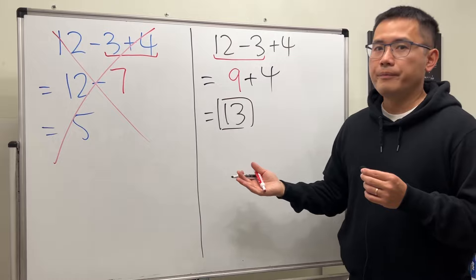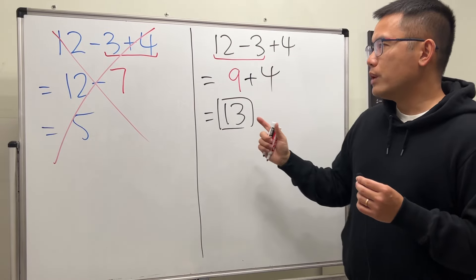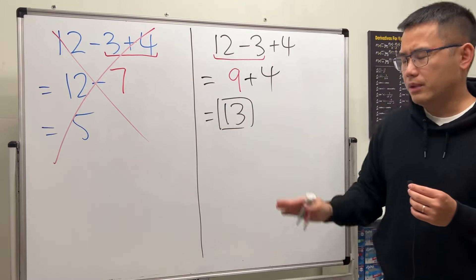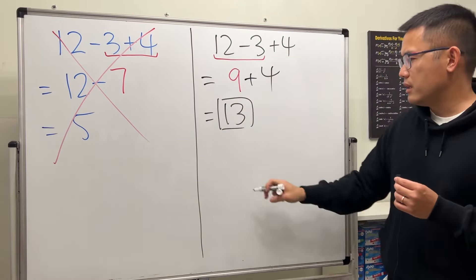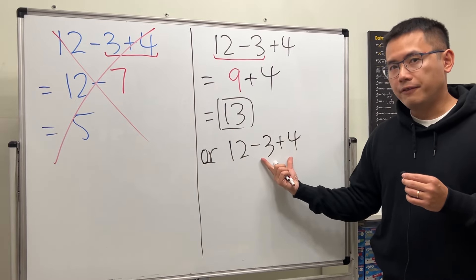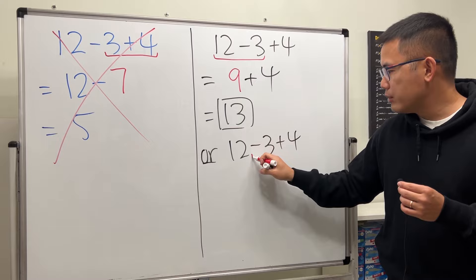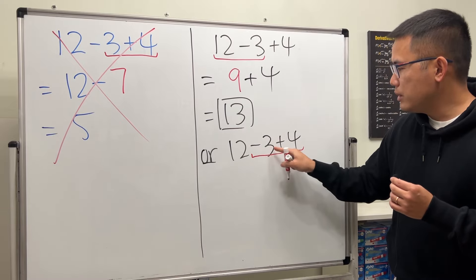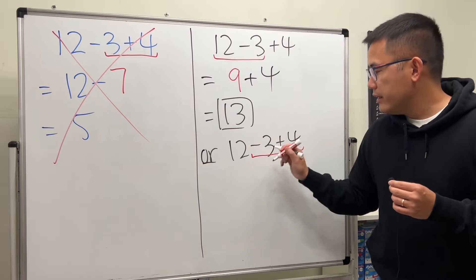So this is the correct answer. However, if you really want to do the addition first it might be okay. Have a look. If you have 12 minus 3 plus 4, if you really want to do this and that first, then you have to look at negative 3 plus 4 first. Negative 3 plus 4 is 1, and that's a positive 1 because the 4 is bigger than negative 3, and then you write down the 12. 12 plus 1 we get 13.